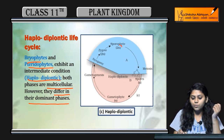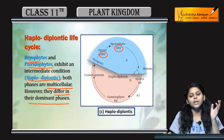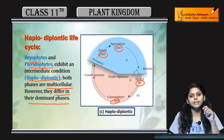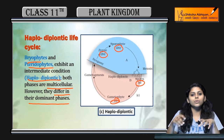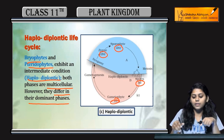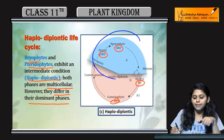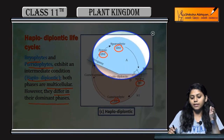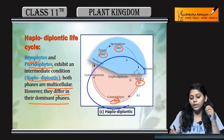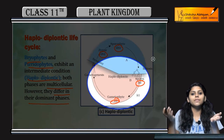The sporophyte is 2N, the zygote is 2N, meiosis produces spores that are N, and the gametophyte is N. So there is both a sporophytic (diploid) stage and a haploid stage present in this life cycle.